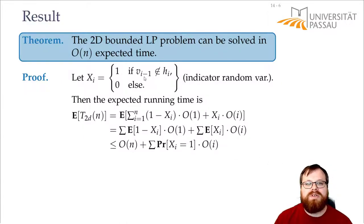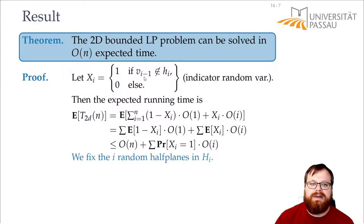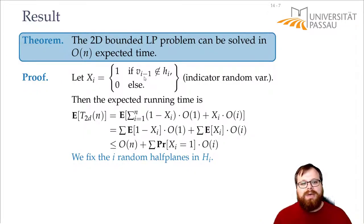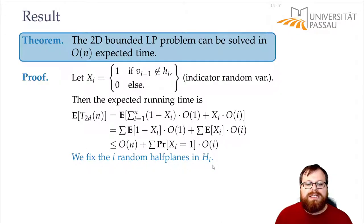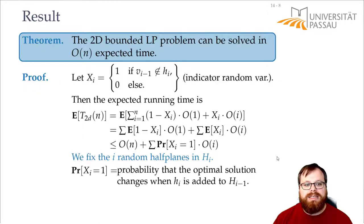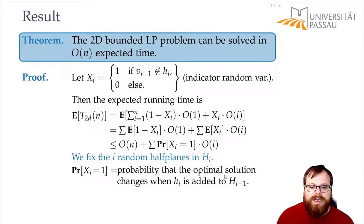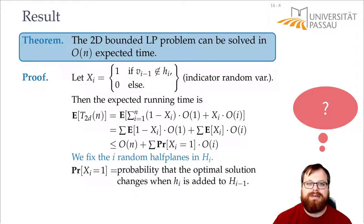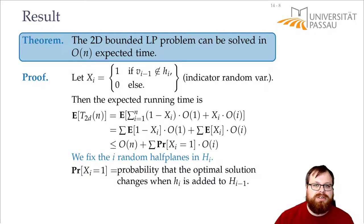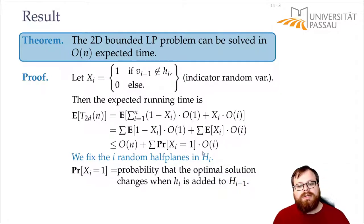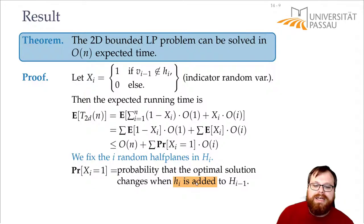What is the probability that the optimum changes in one step? Now let's fix the half planes. We compute the random permutation of the half planes, so h1 is the first one, h2 is the second one, and so on. We want to figure out the probability that the optimum solution changes when hi is added — that is, the optimum in H_i is different from the one in H_{i−1}. Instead of going forward, we use a trick: we go backwards. Instead of adding hi to H_{i−1}, we just remove it from H_i.